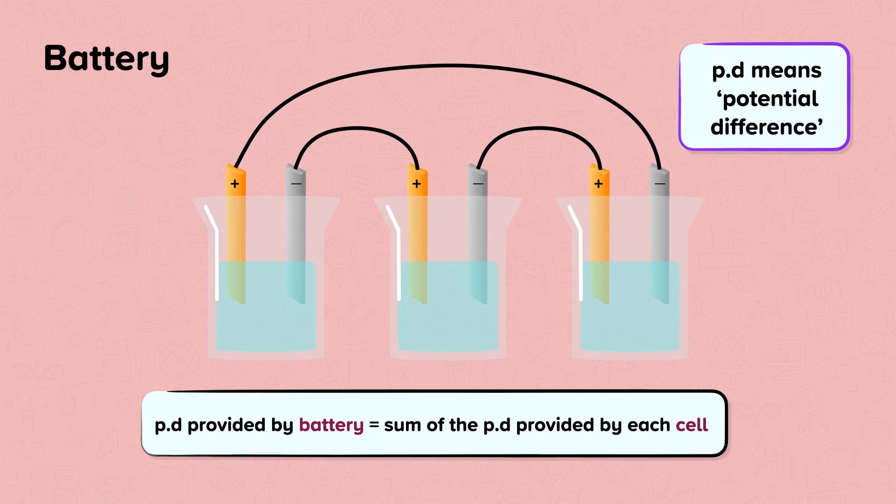The potential difference across a battery can be found by adding together the potential difference provided by each individual cell. So the potential difference provided by the battery is equal to the sum of the potential difference provided by each cell.